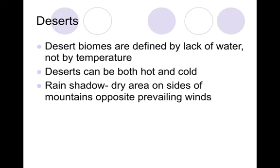Next are our deserts. Desert biomes are defined more by the lack of water, not by their temperatures — because deserts can be high and cold. During the day they're very hot; they can get pretty cool at night. Deserts can be created by things called rain shadows, where we get dry areas on the far side of mountains. As clouds rise into the atmosphere, the cooler temperature causes water molecules to get denser and heavier, producing precipitation on one side of a mountain range. By the time it gets over to the other side, there's no precipitation left — that's called rain shadowing and that is on the test.